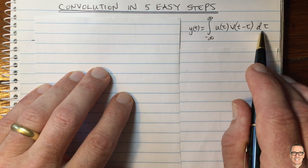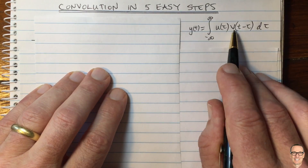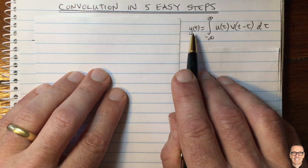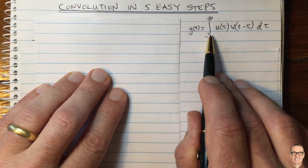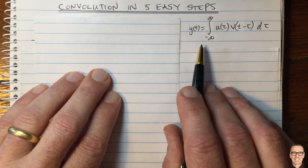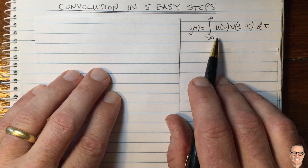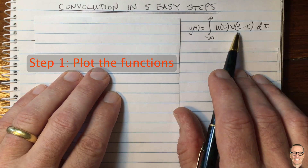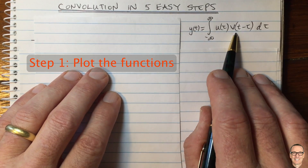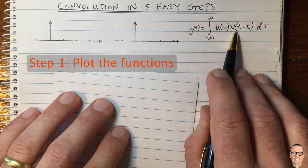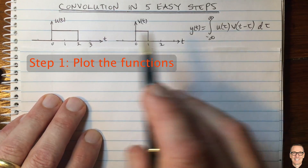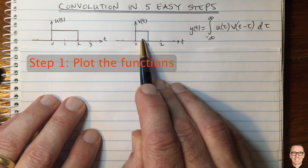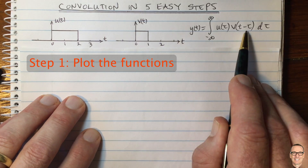Here's the equation for convolution. The two input functions are multiplied together, and that gives you an output function after you take an integral. Step one is to visualize these input functions and plot the functions — I really can't stress this highly enough. Here are two functions that we're going to use as examples, and we're going to do this convolution.